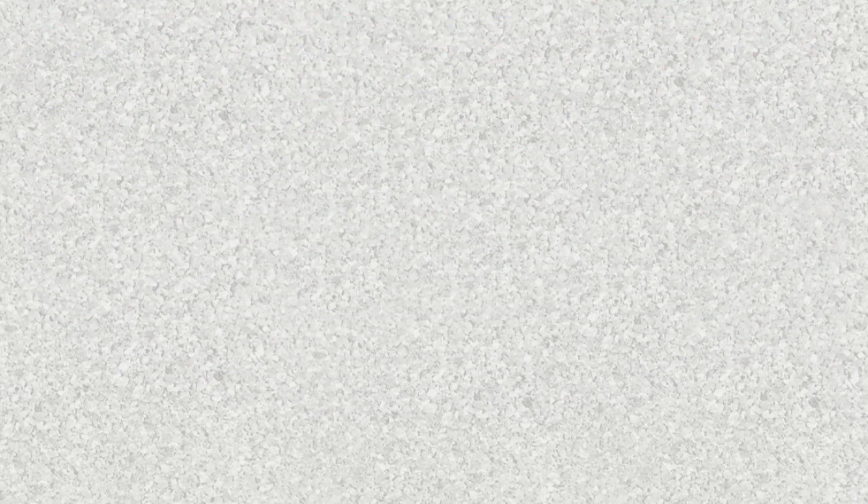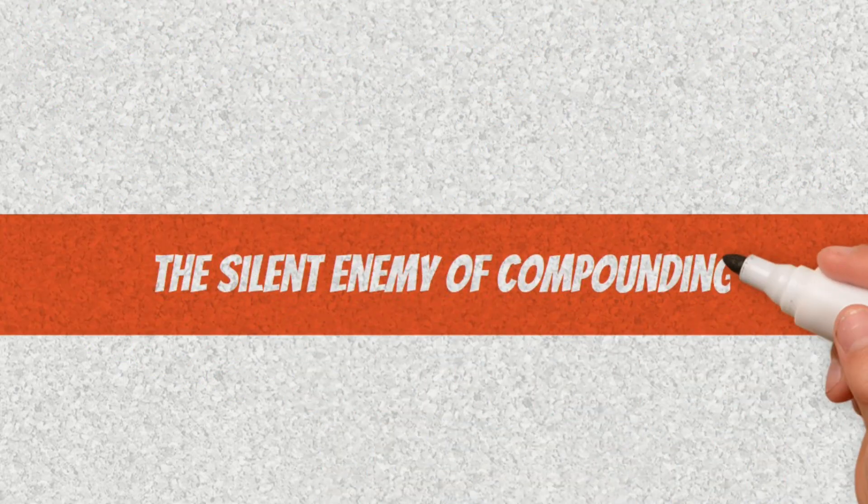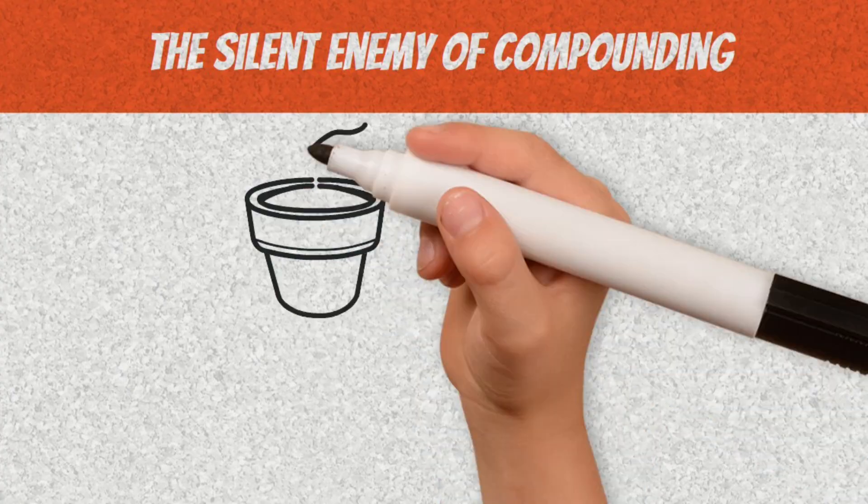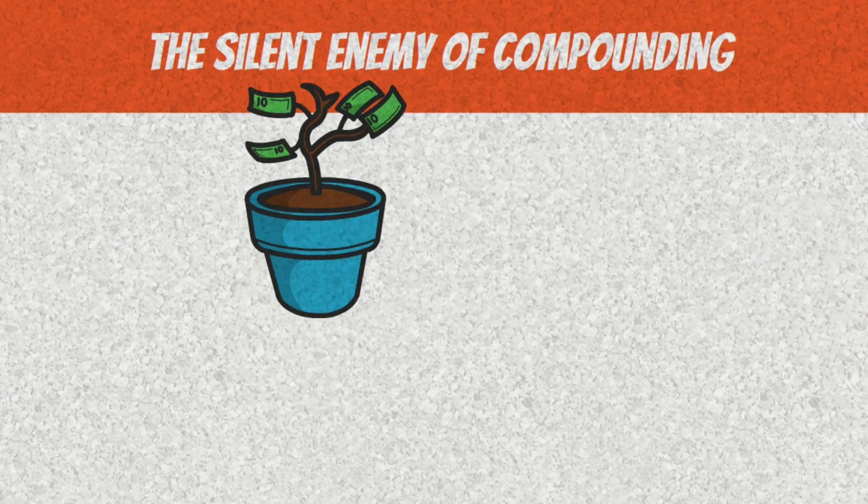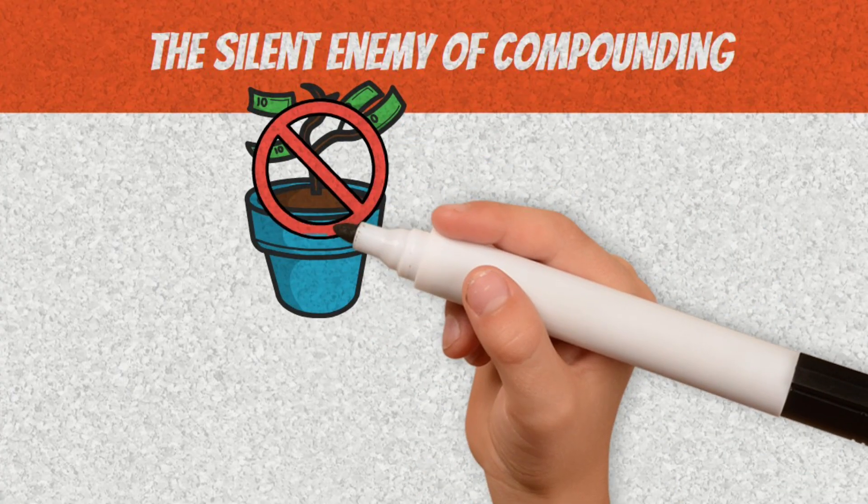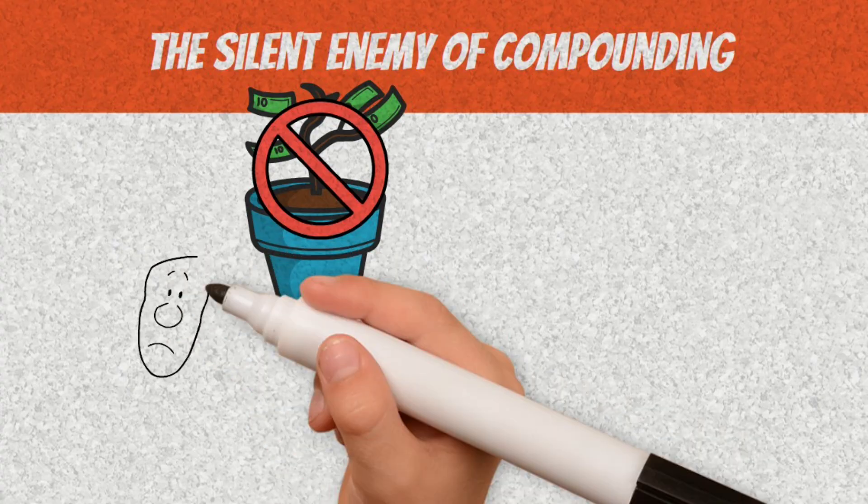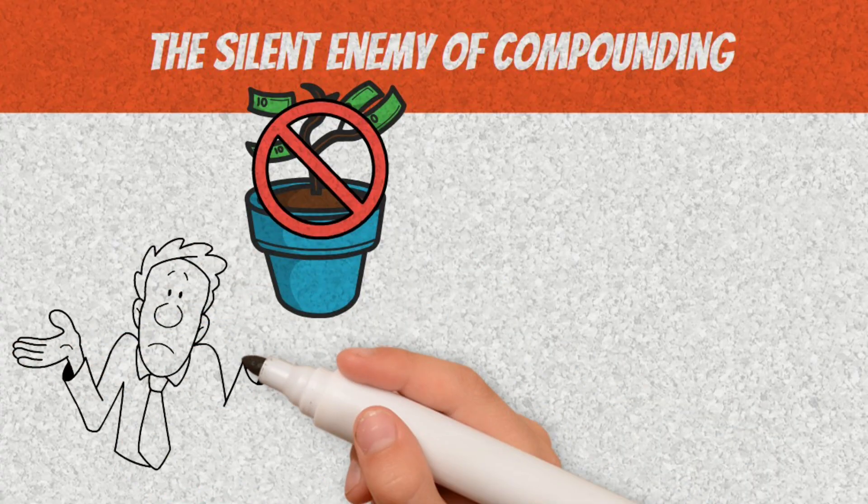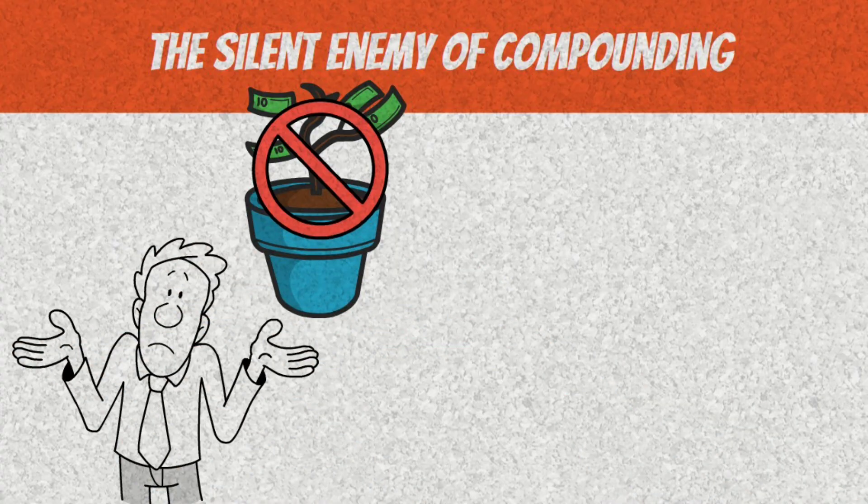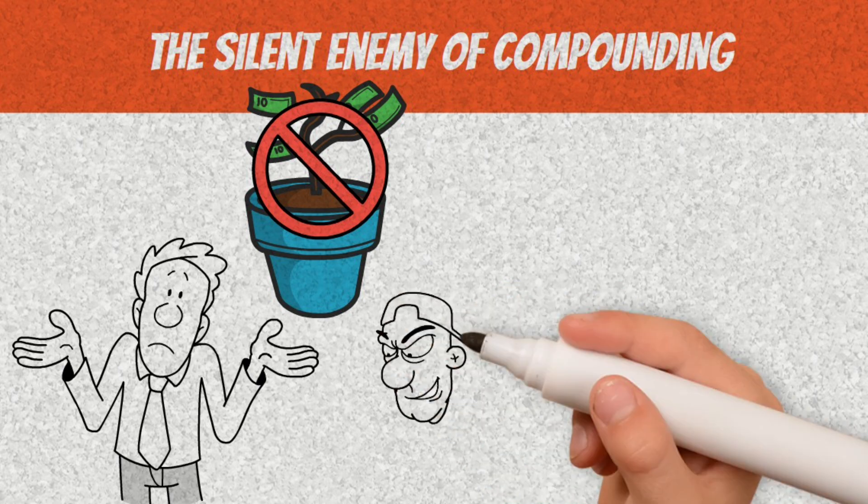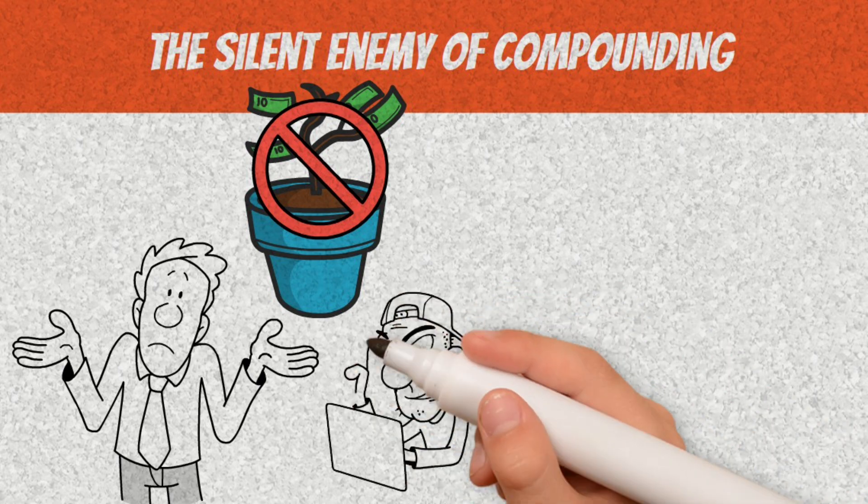The silent enemy of compounding. If there's something capable of destroying the power of compound interest, it's breaking the cycle. And the worst part is that most of the time, this happens silently without you noticing. Small wrong decisions, repeated over time, end up sabotaging years of financial growth.